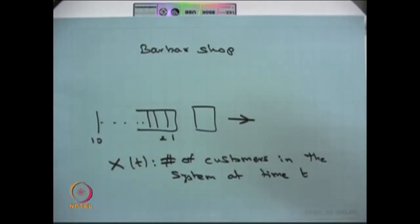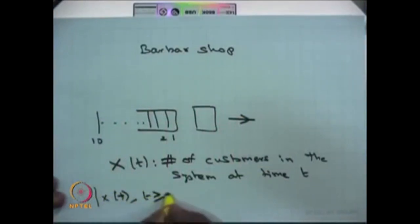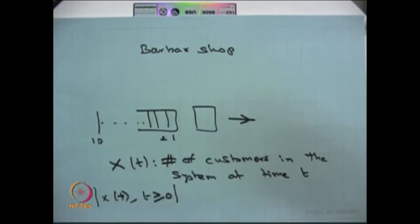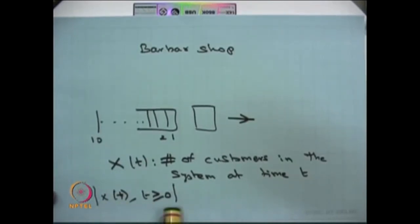Our interest is: given a capacity of 10, what is the waiting time when customers enter the system? From the customers' point of view, how can we reduce the average waiting time? From the barbershop's point of view, how can we increase revenue — that is, how can we increase system capacity to make more profit over time? If we know the dynamics of xt over t from 0 to infinity, we can find average number of customers, average waiting time, and other probabilistic measures. This is one example of a stochastic process.